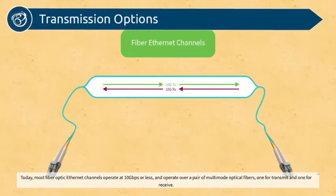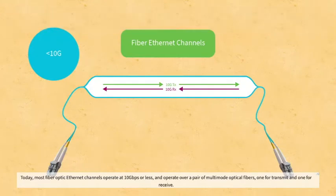Today, most fiber-optic Ethernet channels operate at 10 gigabits per second or less over a pair of multimode optical fibers, one for transmit and one for receive.